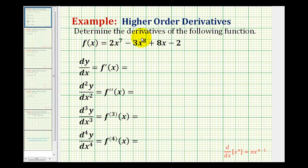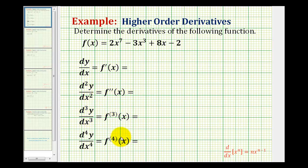In this lesson we'll be taking a look at higher order derivatives. Higher order derivatives refer to the second derivative, third derivative, fourth derivative, and so on. We're familiar with the notation for the first derivative seen here, but now we need to become familiar with the higher order derivative notation, as we see here for second derivative, here for third derivative, here for fourth derivative, and so on.